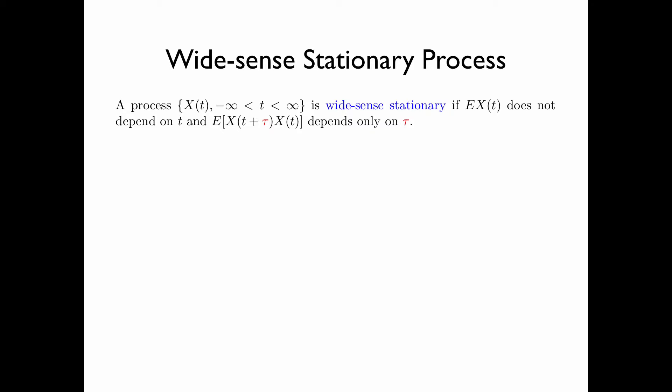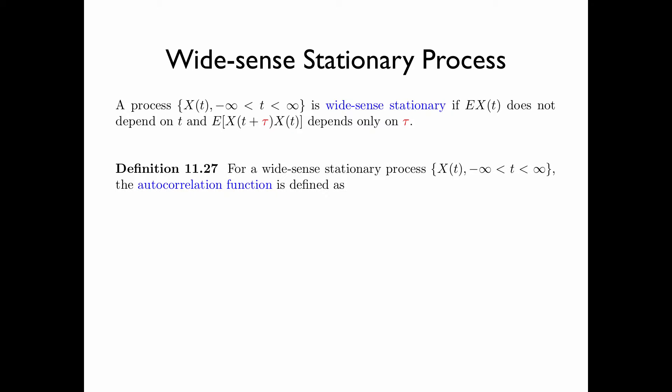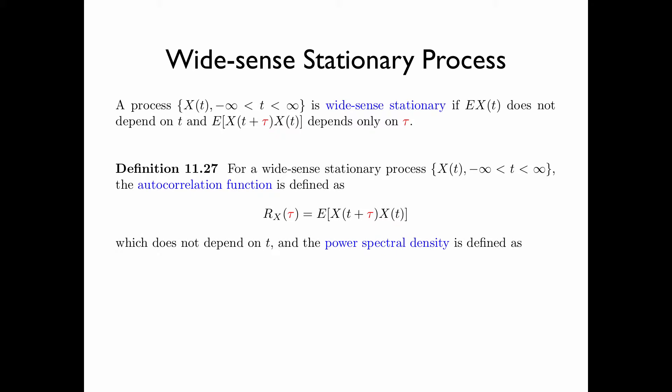A process x of t for t from minus infinity to infinity is wide sense stationary if the expectation of x of t does not depend on t, and the expectation of x of t plus tau times x of t depends only on tau but not on t. For a wide sense stationary process x of t, the autocorrelation function is defined as rx of tau equals the expectation of x of t plus tau times x of t, and the power spectral density Sx of f is defined as the Fourier transform of the autocorrelation function.